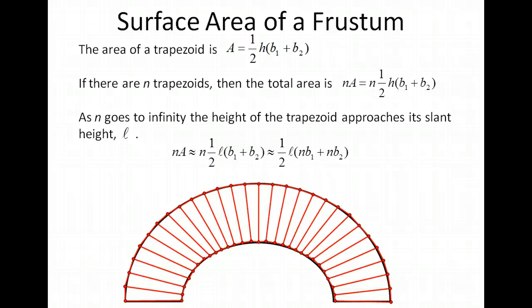If you look at what n times b1 is, it's really an estimate for the length of the inner arc. It's the sum of the bottom bases of the trapezoids. n times b2 is the sum of the top bases of all the trapezoids.